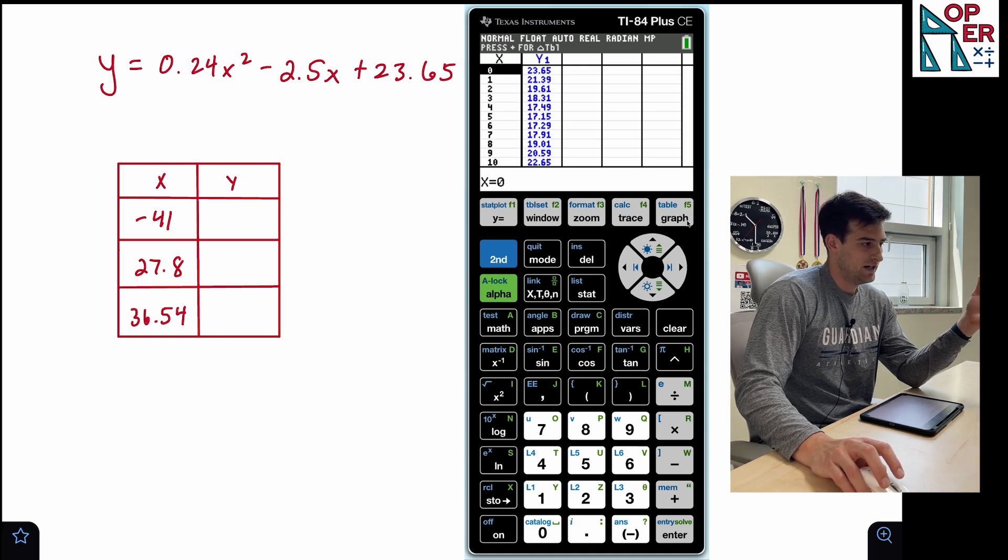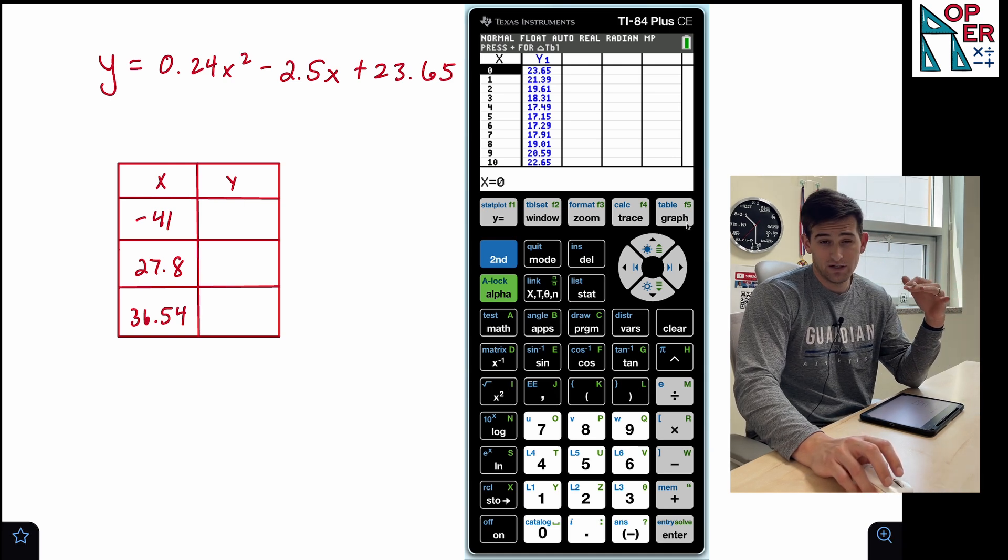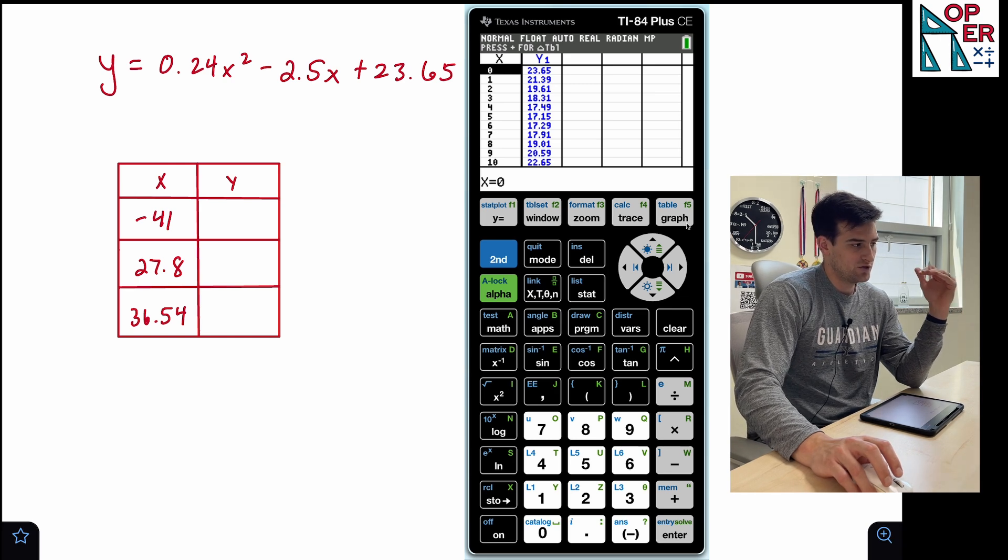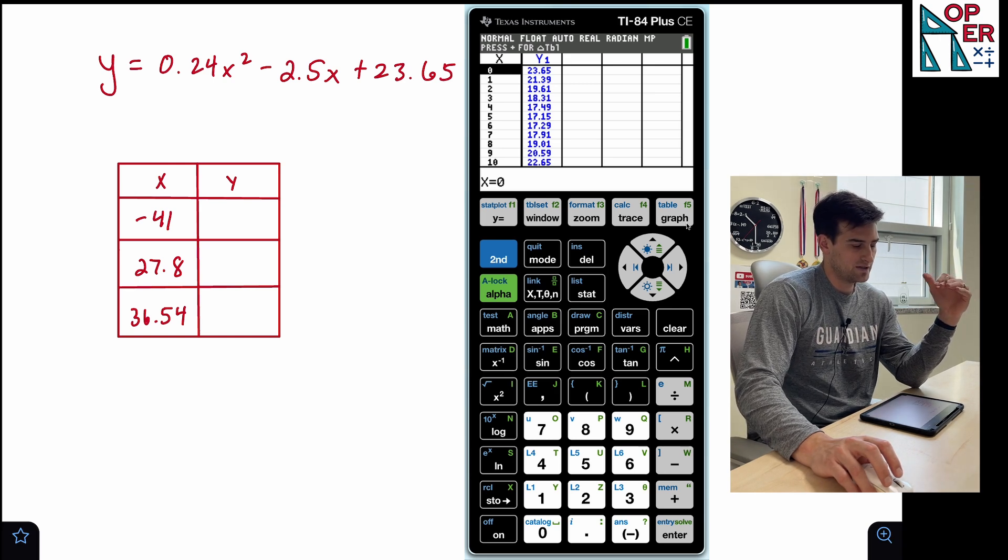And now we take a look at our table of values. So we see x and for mine, it's starting off with an x value of zero. And notice my increments are just 0, 1, 2, 3, and so on. So they're going up by one.